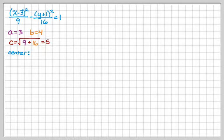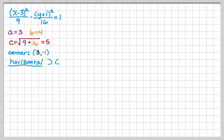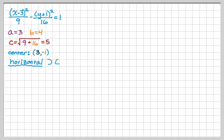The center you just read off, so that's going to be (3, −1). Then you want to know what direction it opens. X comes first, which means it's going to be horizontal — it kind of looks like that.